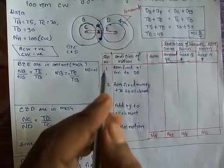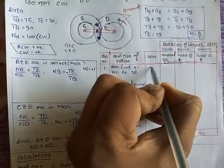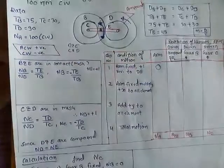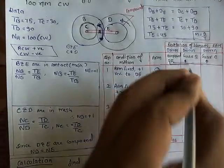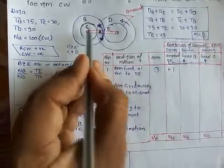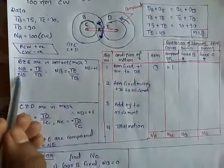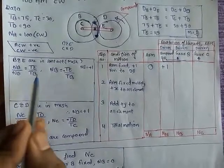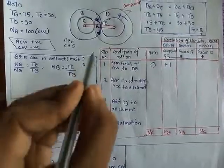Now, what is the first condition? The formula is the speed ratio NB upon NE equals TE upon TB. The value of NB upon TB, because NE value is plus 1, but NE is in the clockwise direction.